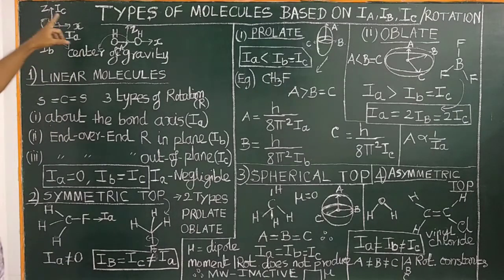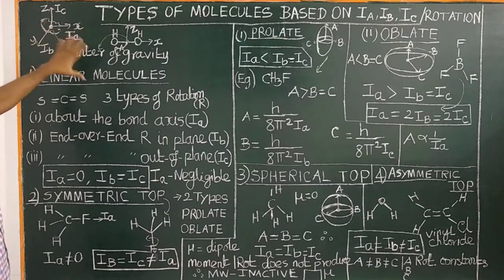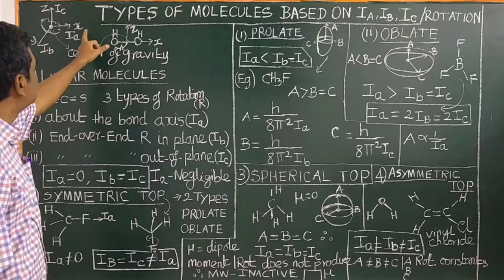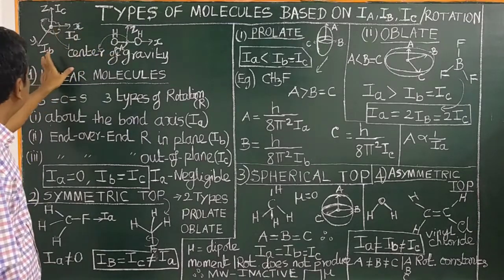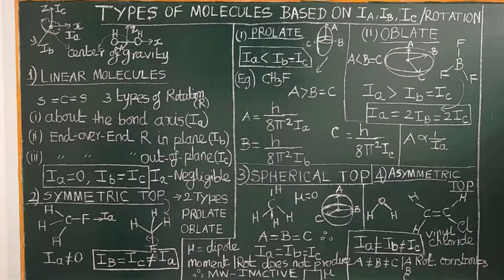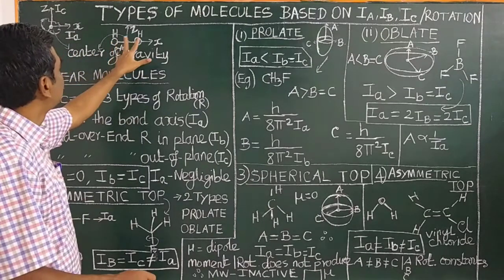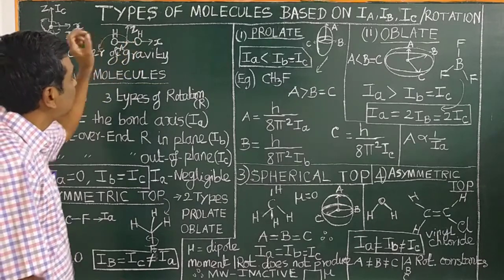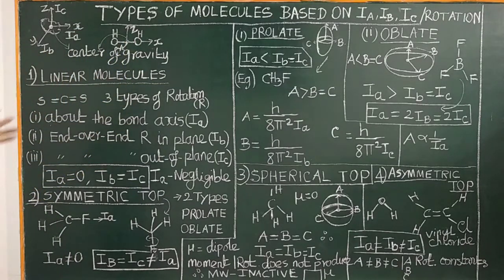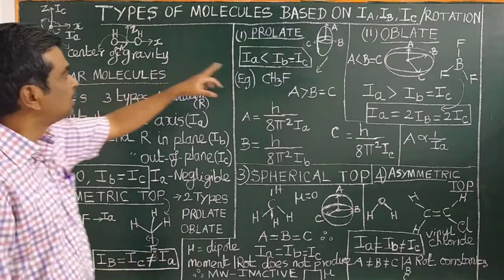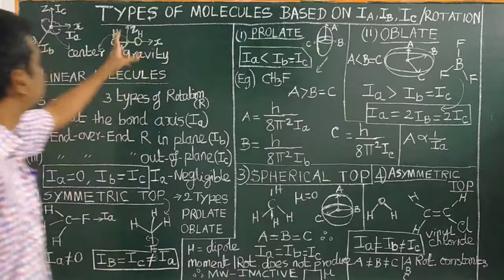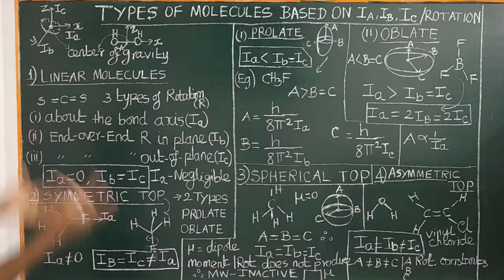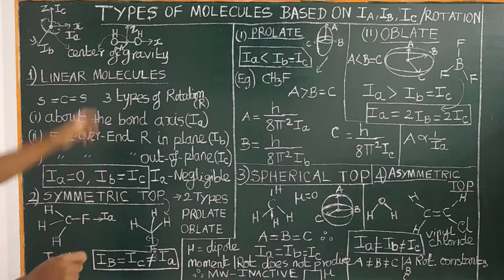There will be three principal moments of inertia perpendicular to each other: along the X-axis, Ia; along the Y-axis, Ib; along the Z-axis, Ic. Similarly, for a molecule, through its center of gravity, there are three rotational components A, B, C. Therefore, there are three principal moments of inertia: Ia, Ib, and Ic.